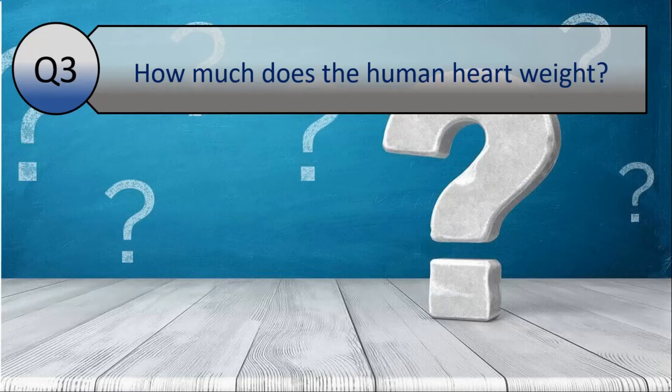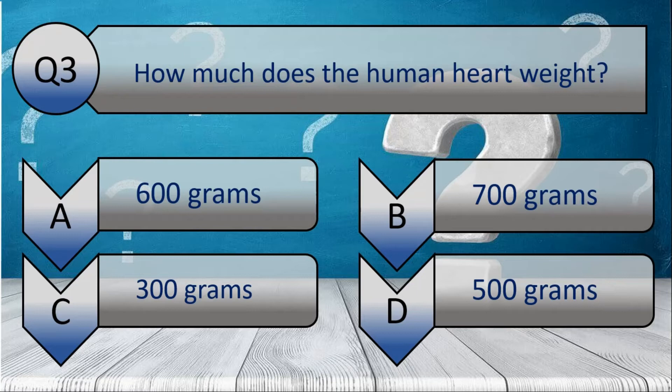Your third question is: how much does the human heart weigh? Your options are A. 600 grams, B. 700 grams, C. 300 grams, or D. 500 grams. And the correct answer is C. 300 grams.